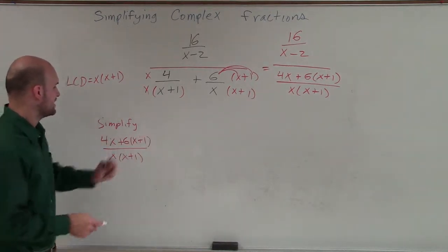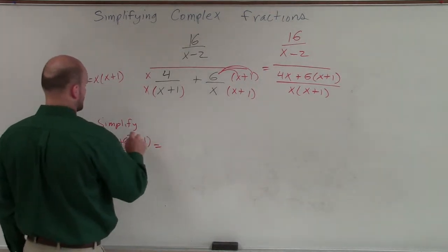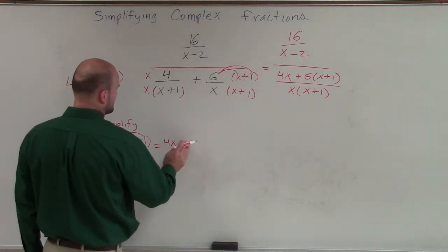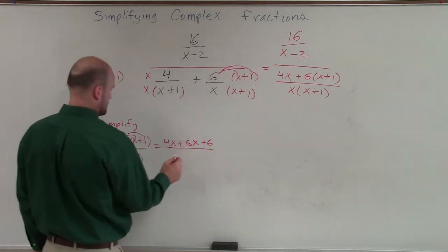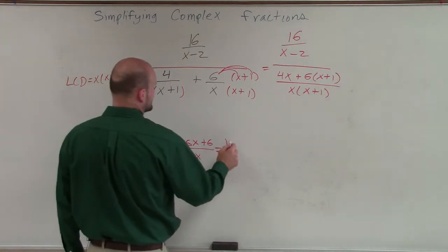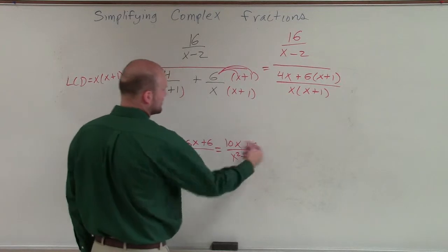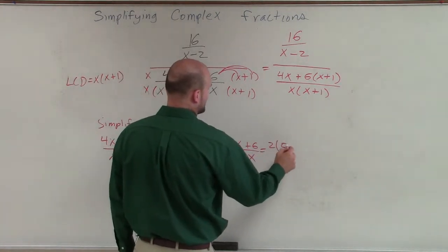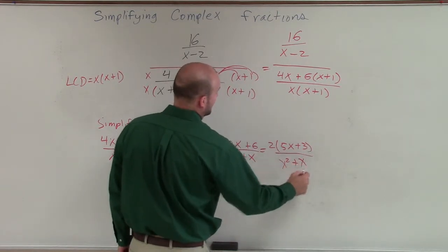OK, so now I can apply distributive property to both my denominator and my numerator. Therefore, I'll have (4x + 6x + 6)/(x² + x), which turns into (10x + 6)/(x² + x), which in this case I can factor out a 2. So therefore, I'll be left with 2(5x + 3)/(x² + x).